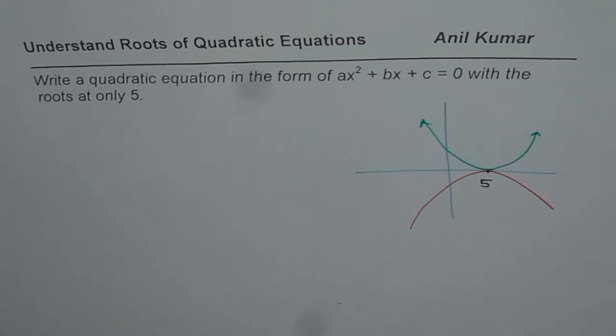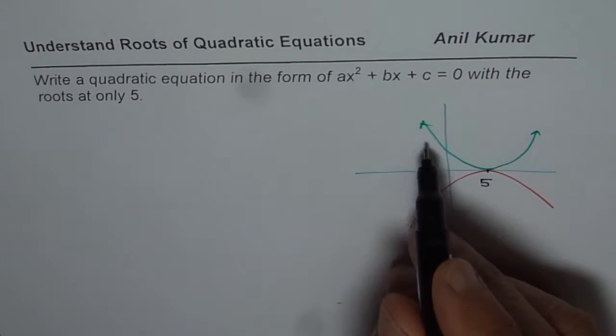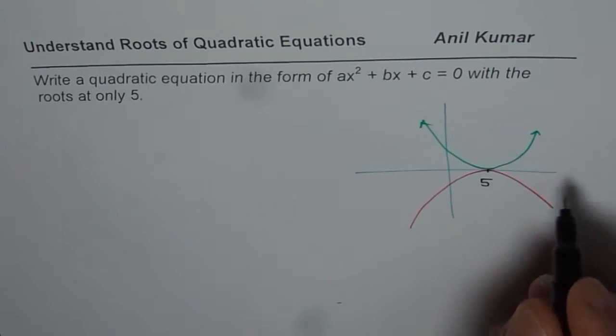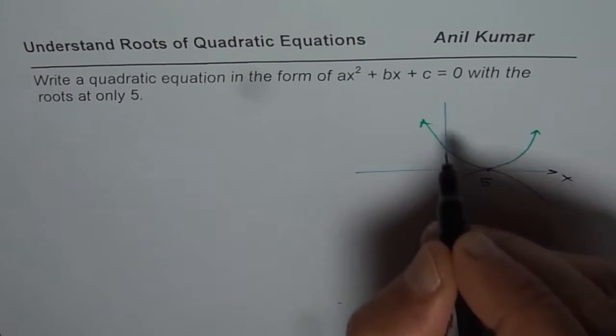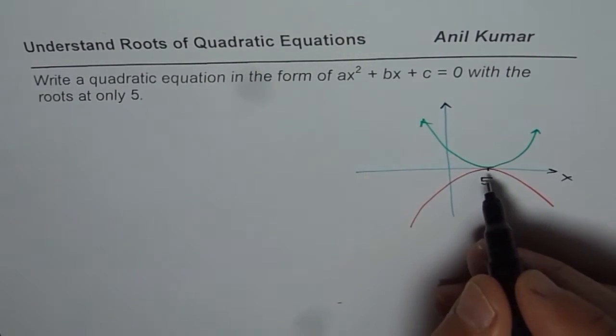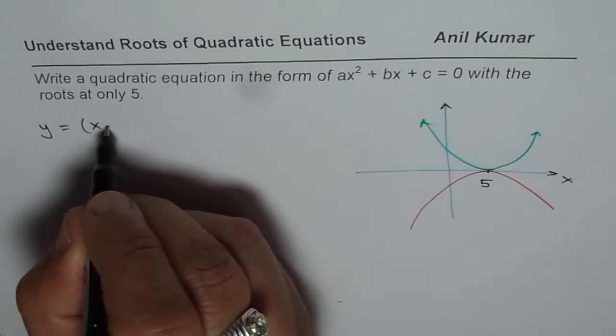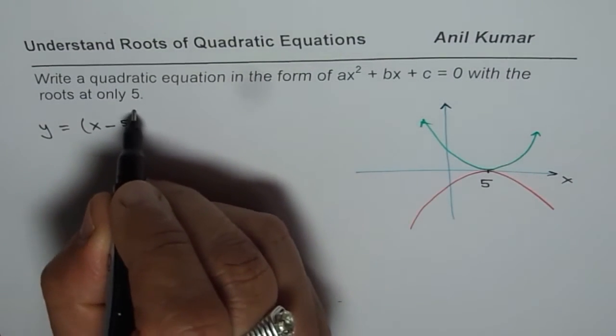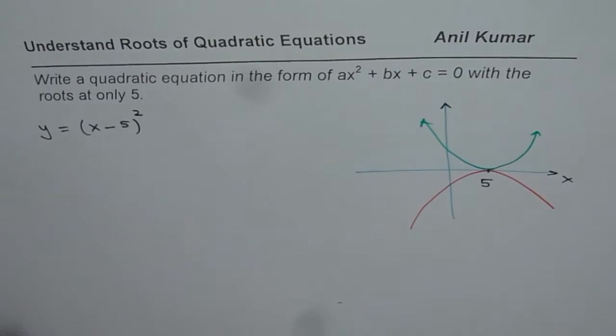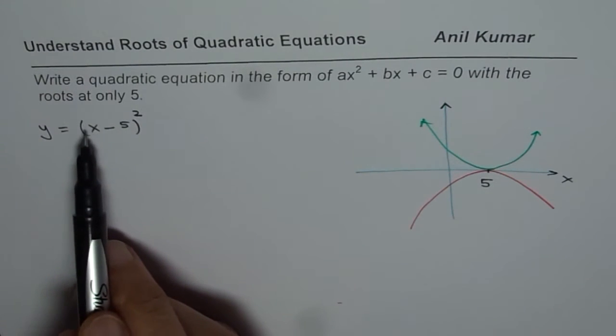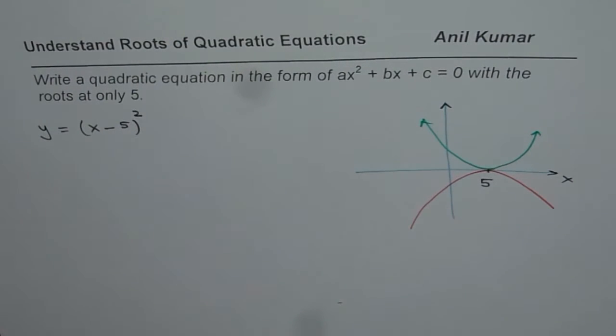Let us write at least one of them. If you have a parabola with vertex on the X-axis, then what equation do you expect? We expect Y equals to X minus 5 whole squared. Now, at X equals to 5, this will be 0. So that is what we are trying to say.